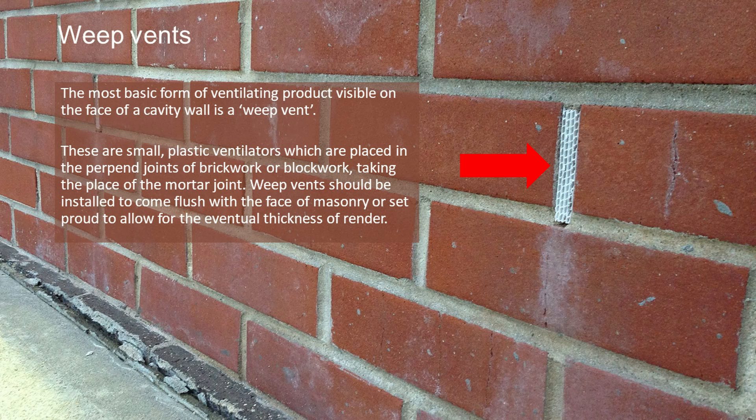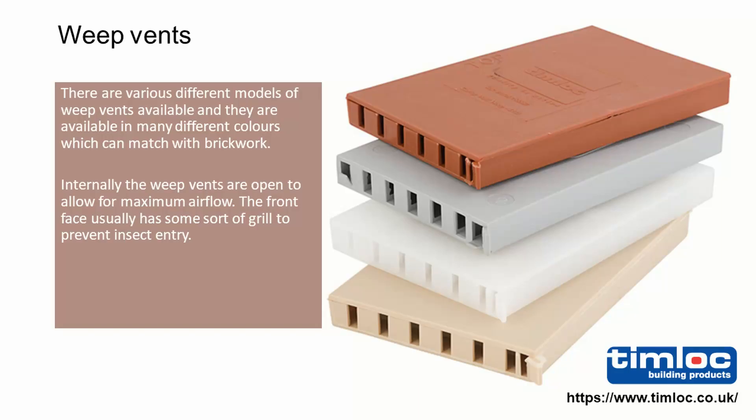Weep vents should be installed to come flush with the face of masonry — you want them to stand out from the face so that any moisture running through them falls clear. There are various models available in different colours from different manufacturers, and you can match them to the colour of your brick. Internally the weep vents are open, providing an open channel for maximum airflow and drainage, and the front face usually has some kind of grill attached to it.